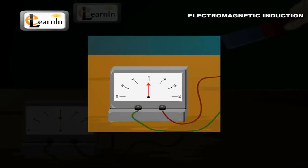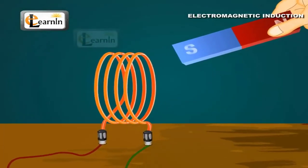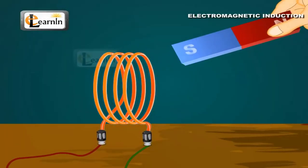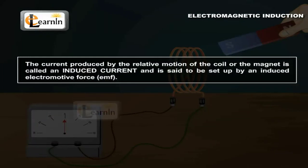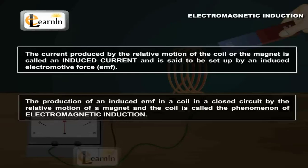When the magnet is kept stationary, no deflection is observed. A relative motion of a magnet and a coil induces current in the coil. The current produced by a relative motion of the coil or the magnet is called an induced current and is said to be set up by an induced electromotive force, or EMF. This phenomenon is called electromagnetic induction.